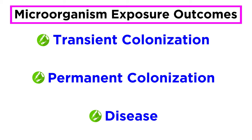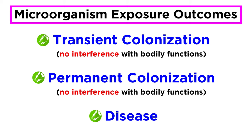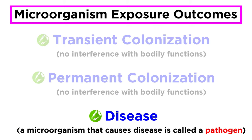The language here can be a little bit tricky, so let's make sure we understand the difference between colonization and disease. Microorganisms that colonize humans, whether transiently or permanently, do not interfere with normal bodily functions — they're just present, along for the ride, so to speak. However, disease occurs when microorganisms cause damage to a human host. A bacterium, virus, or other microorganism that can cause disease is called a pathogen.